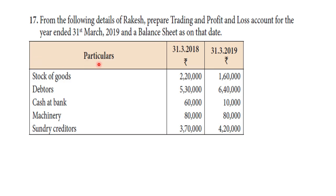Particulars as of 31st March 2018: opening stock of goods is 2,20,000; debtors 5,30,000; cash at bank 60,000; machinery 80,000; sundry creditors 3,70,000. As of 31st March 2019: closing stock 1,60,000; debtors 6,40,000; cash at bank 10,000; machinery 80,000; sundry creditors 4,20,000.